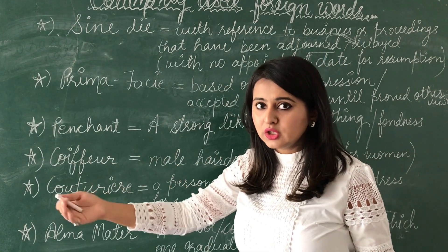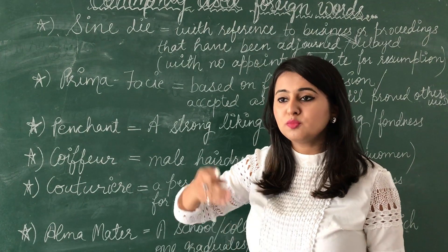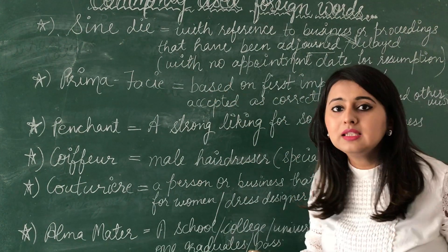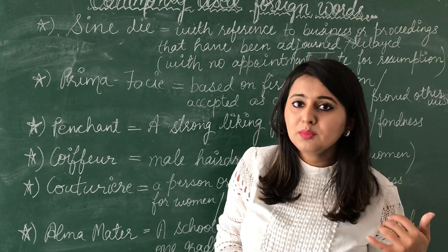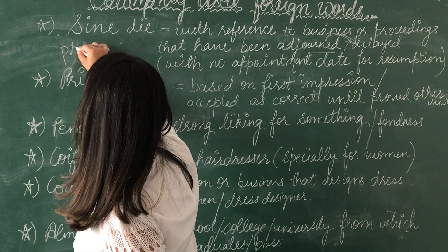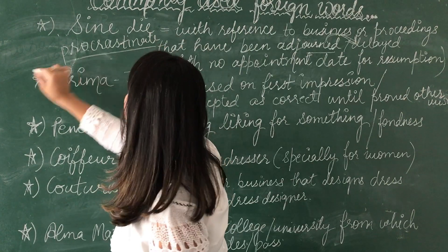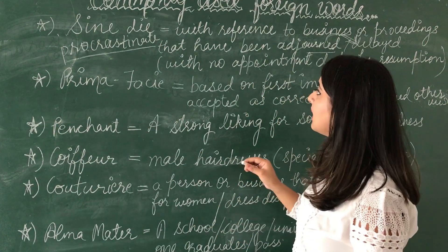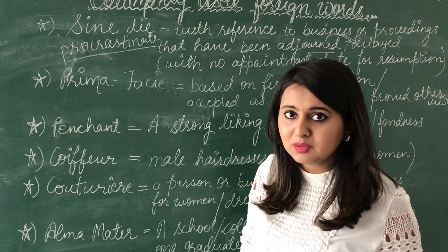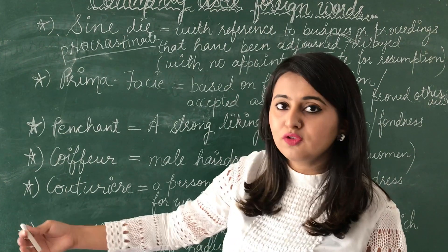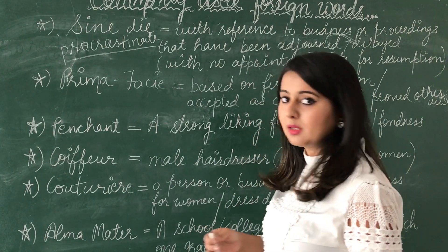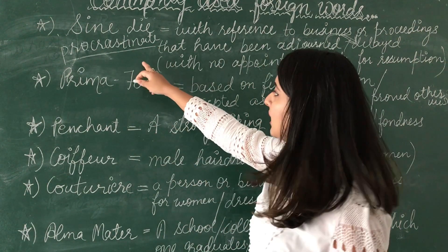Generally we adjourn or delay meetings but give them a specific time — that the meeting has been postponed to tomorrow or the day after. That is a situation where we give a fixed date for the next appointment. But with sine die, I am procrastinating the meeting without saying tomorrow or day after tomorrow — just postponing it with no specific date. That is sine die.